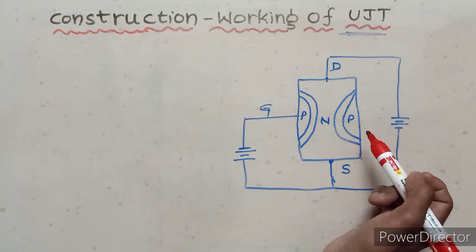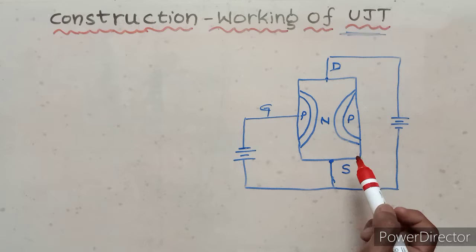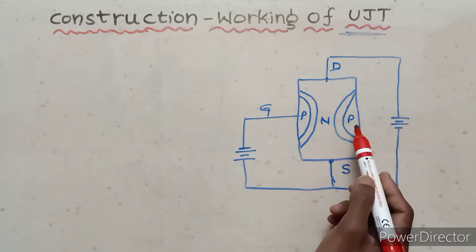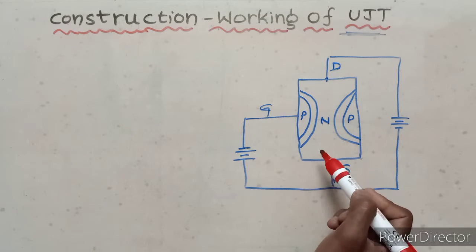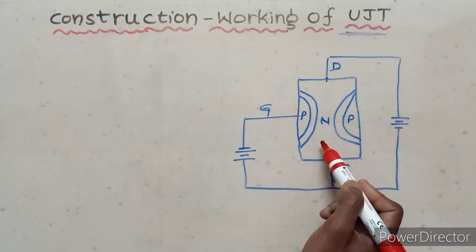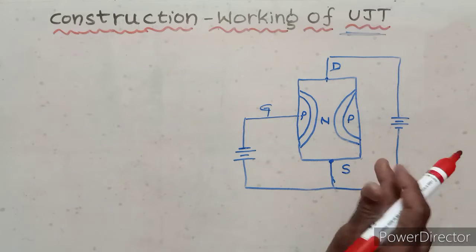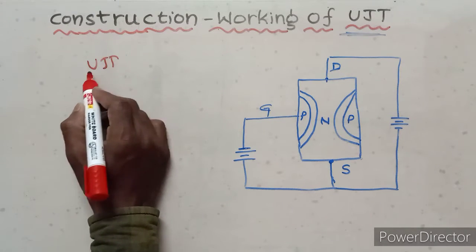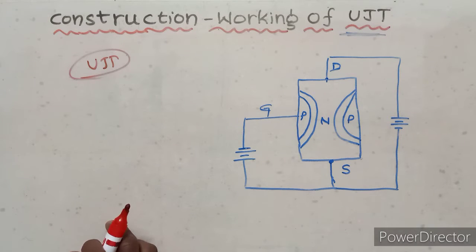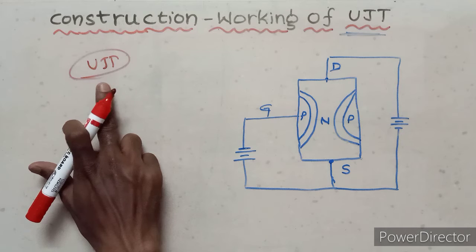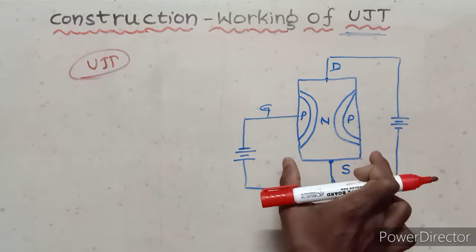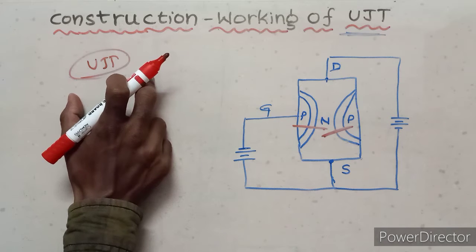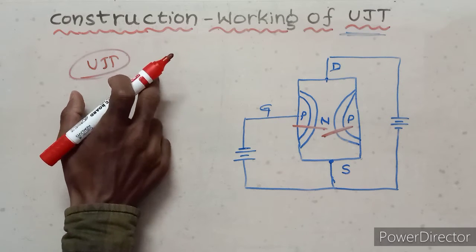UJT is a unipolar device, meaning only majority charge carriers are present — either negative or positive, n-type or p-type semiconductor. The construction of UJT is similar to FET because UJT is also a unipolar junction device. However, in FET there are two p-n junctions, while in UJT there is only one p-n junction.